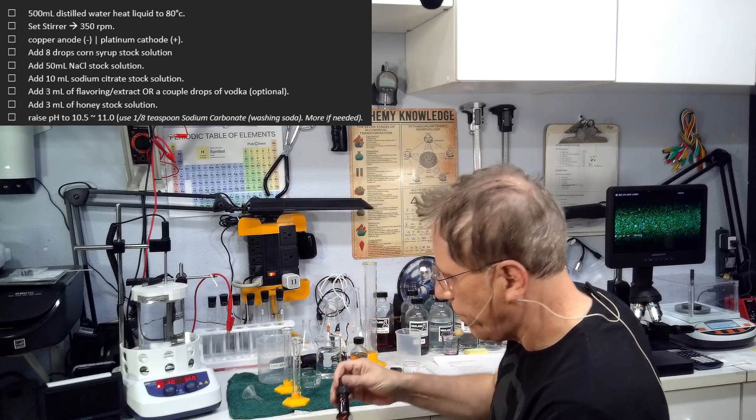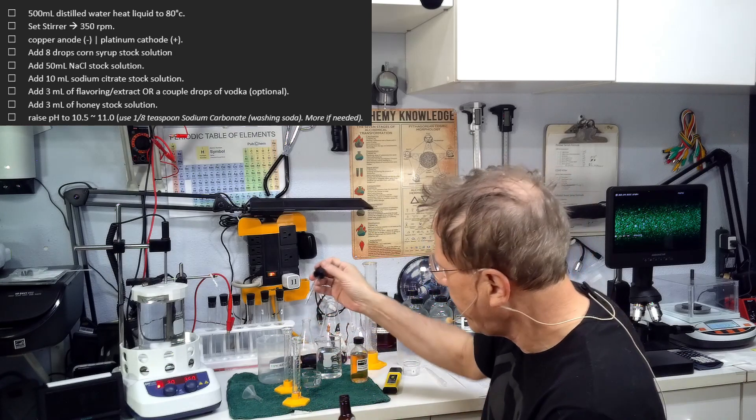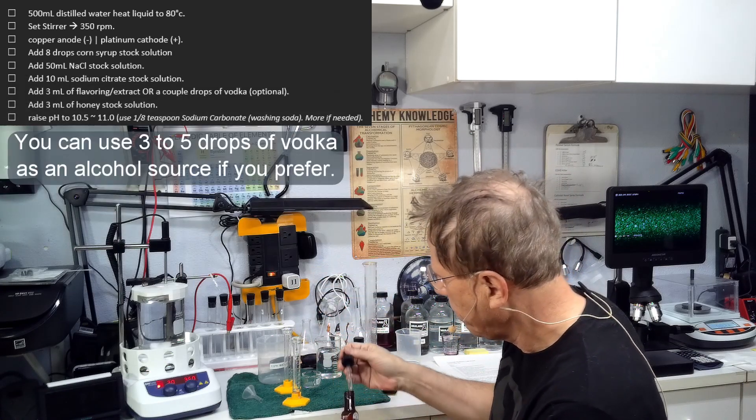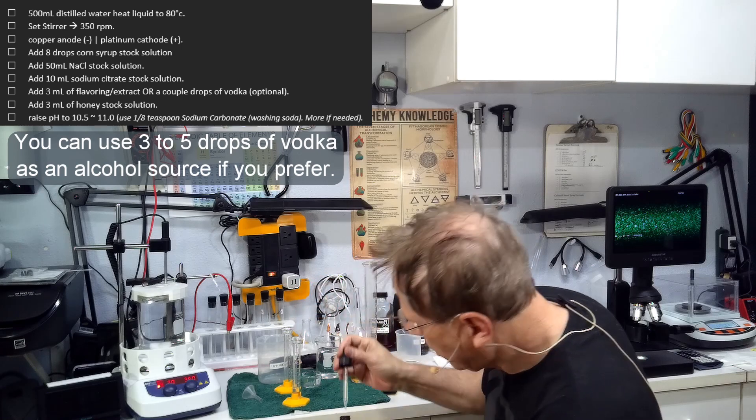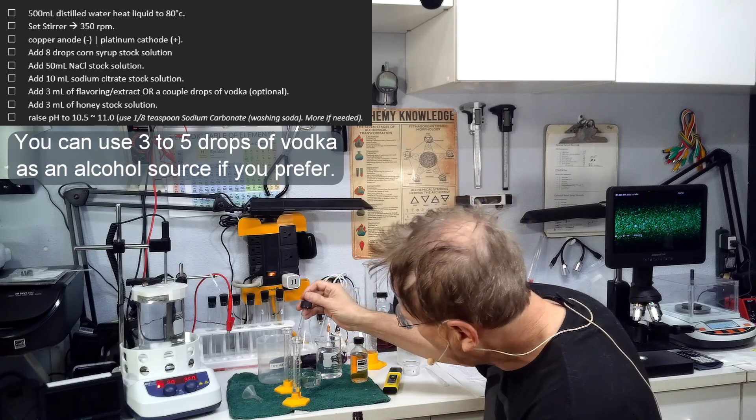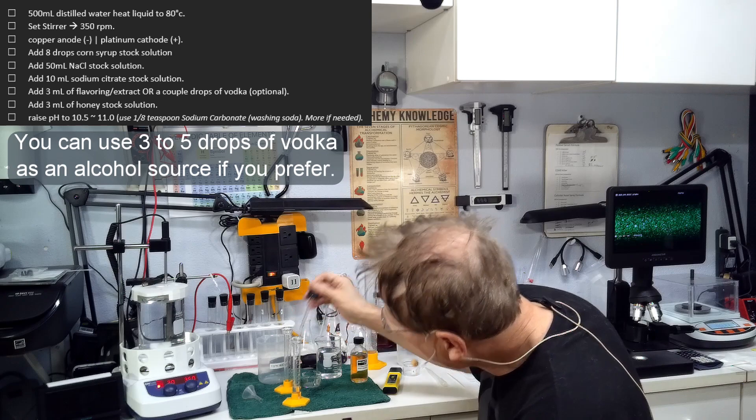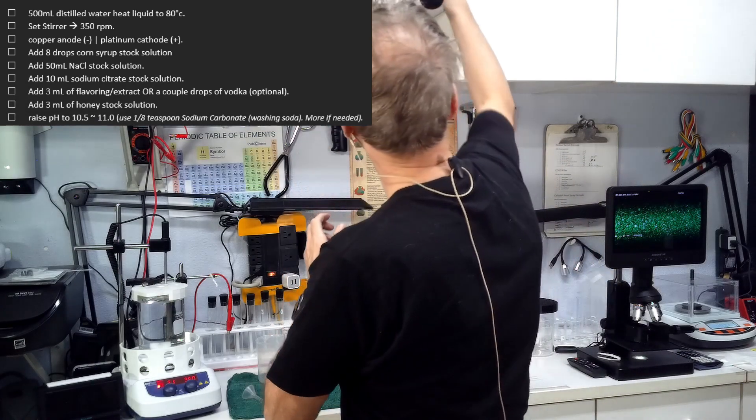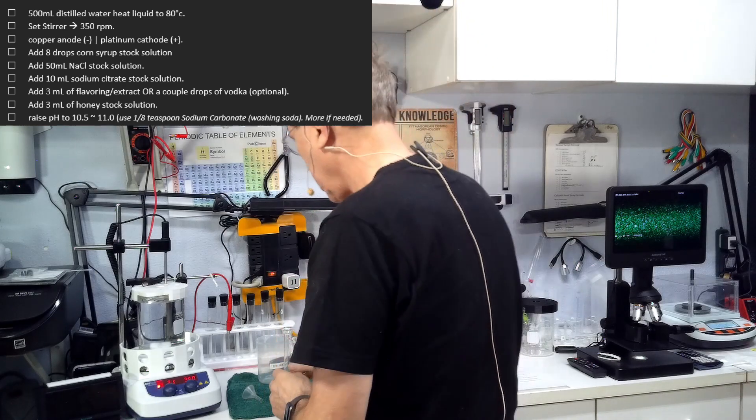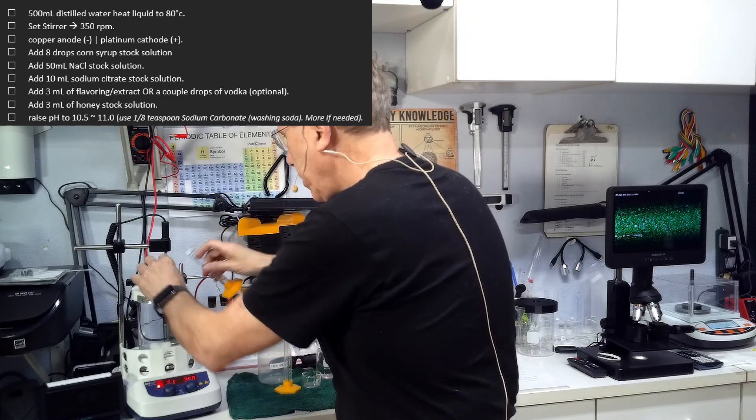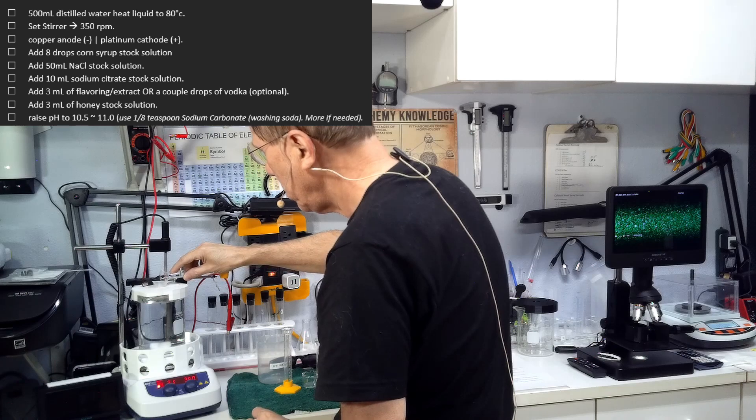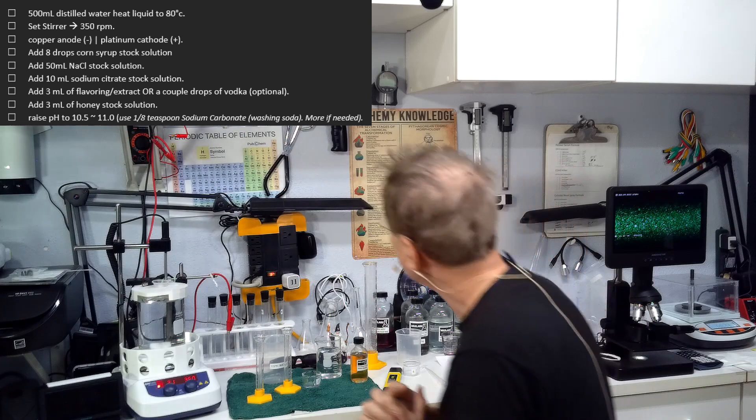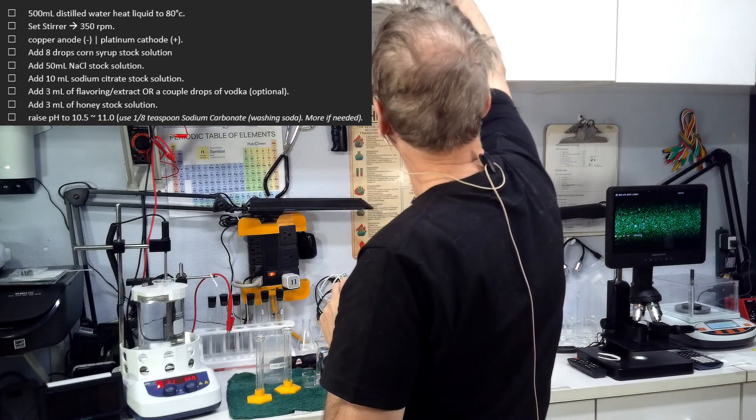Now I'm going to add flavoring extract. Three milliliters is the minimum. This is vanilla flavoring. If you want a stronger taste you can use more. What we're using out of the flavoring is the alcohol that's in the flavoring.